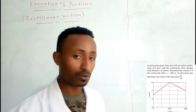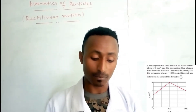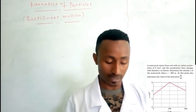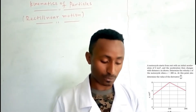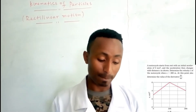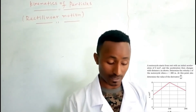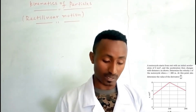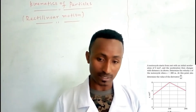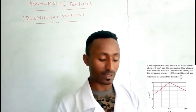The first question: a motorcycle starts from rest with an initial acceleration of 3 m/s². The acceleration then changes with distance S, as shown in the figure below.